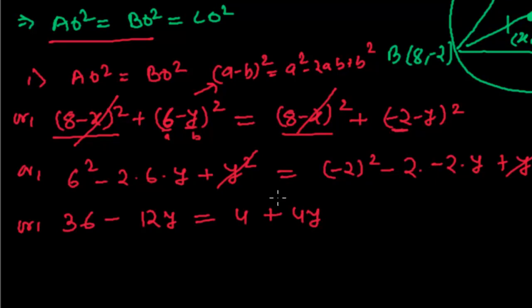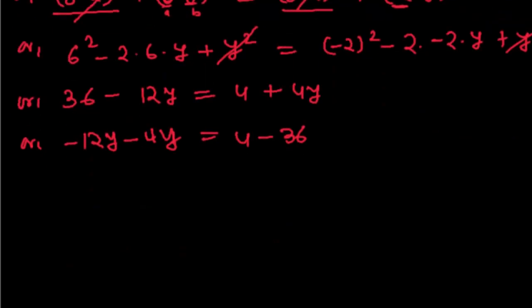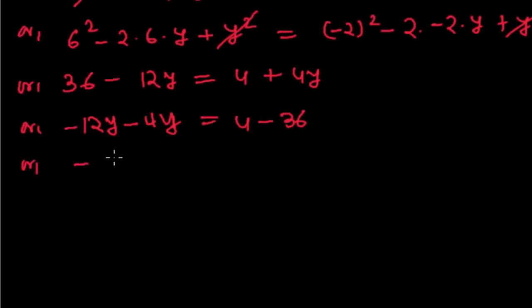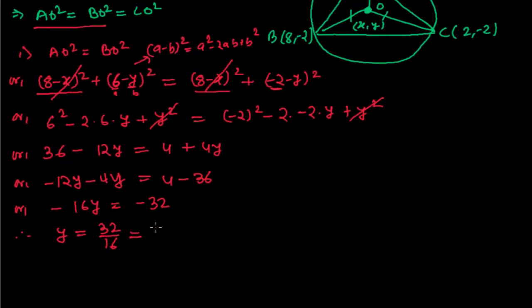Rearranging: 36 - 12y = 4 + 4y. Moving terms: -12y - 4y = 4 - 36, giving -16y = -32. Therefore y = 32 ÷ 16 = 2. We got y = 2.